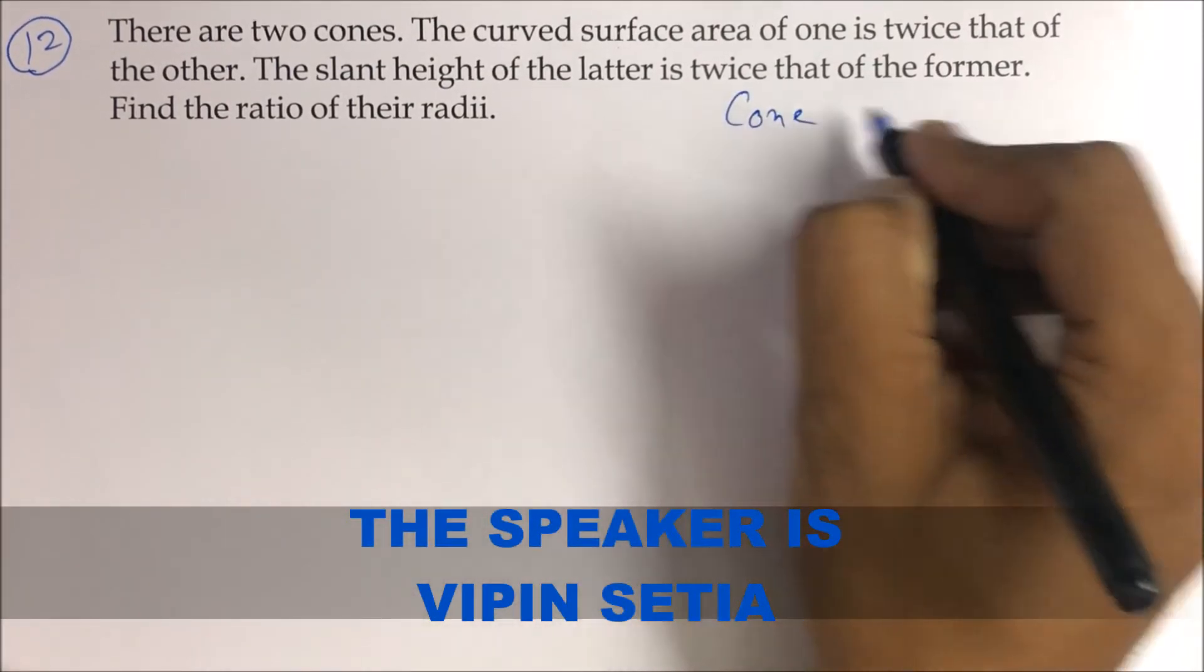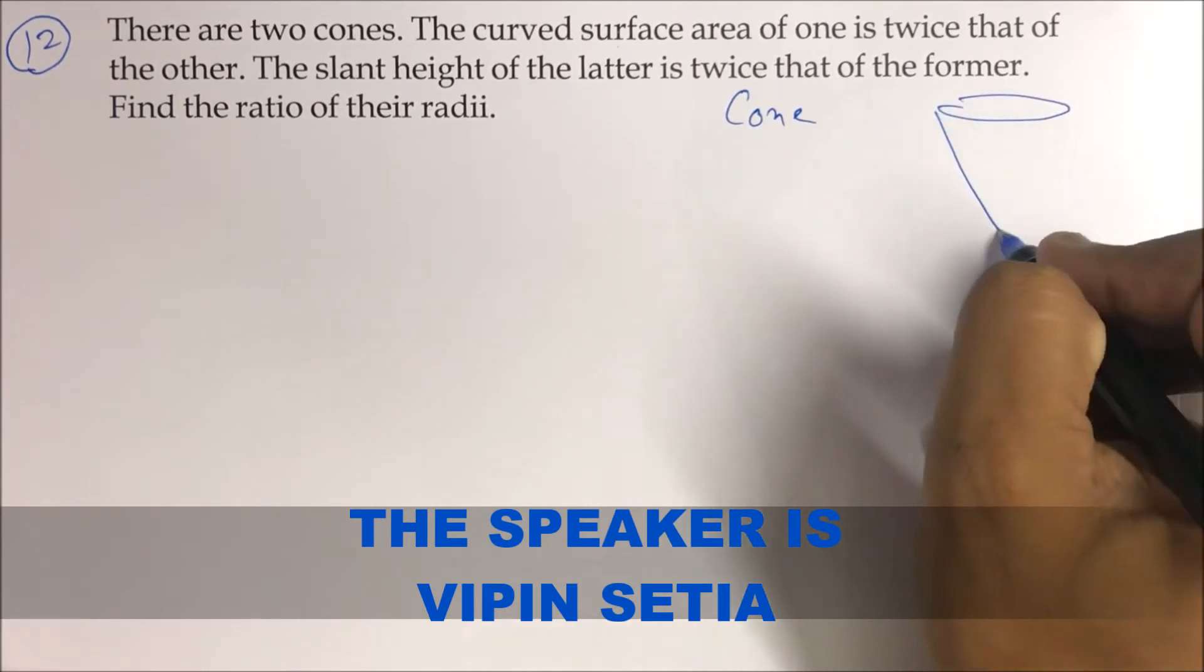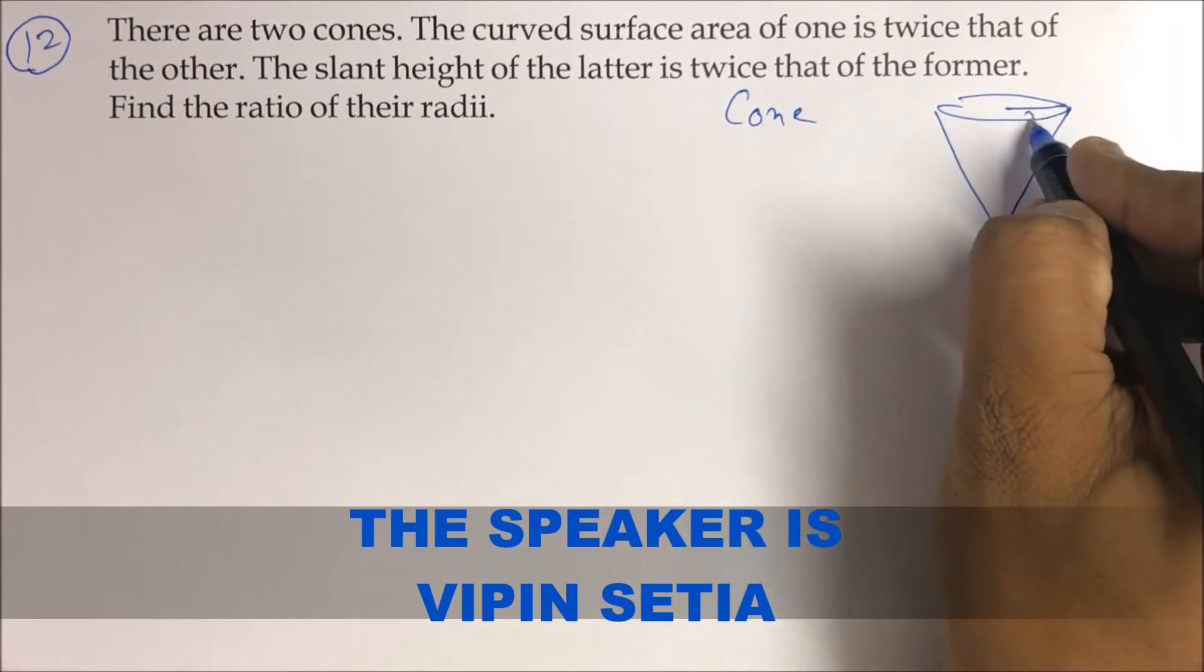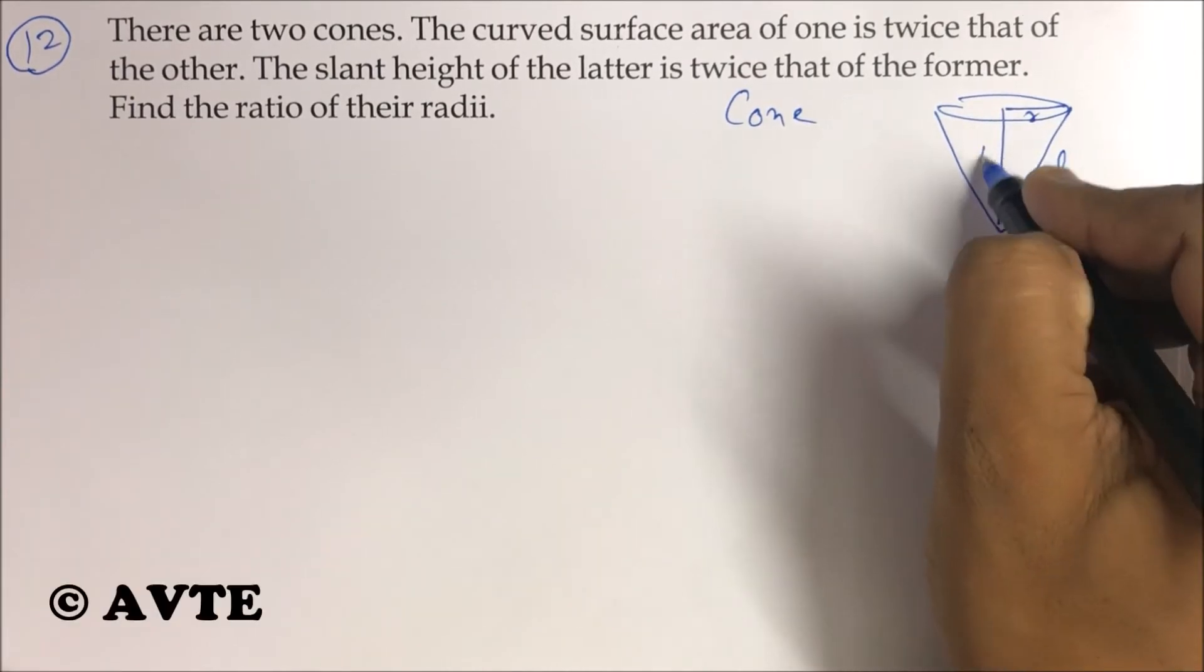So we talk about cones. This is your cone, this is your slant height, this is your radius and this is your vertical height.